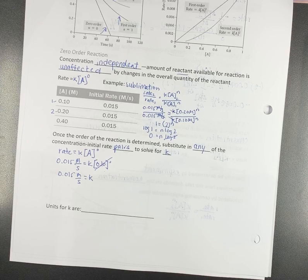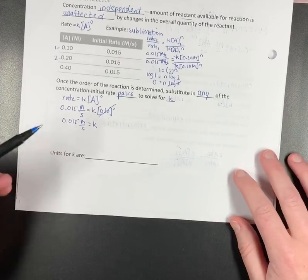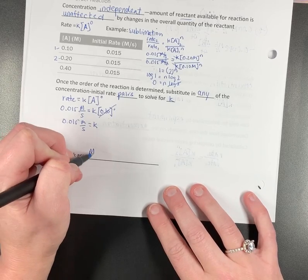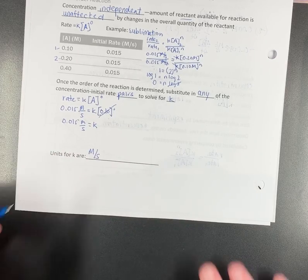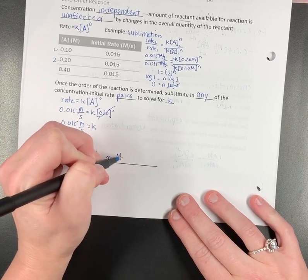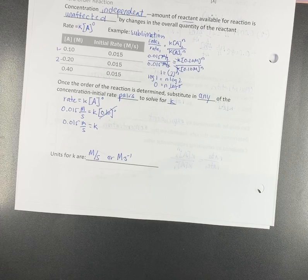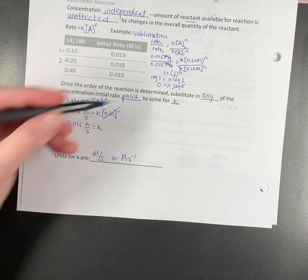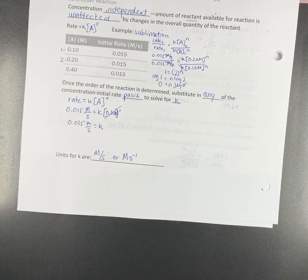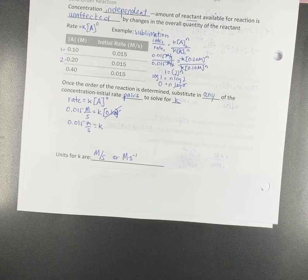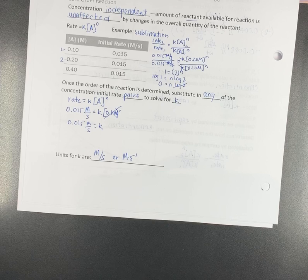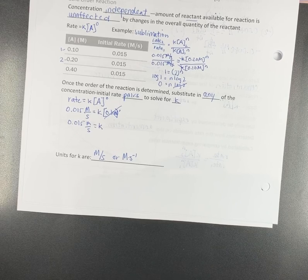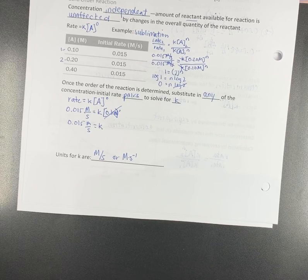The final piece of the puzzle here is the units for K in a zero order reaction are going to be molarity per second, or you may see it written as, it means the same thing, molarity seconds to the minus one. It means the same thing. Yes, it doesn't matter because it's going to go away. Because when we take molarity to zero power...